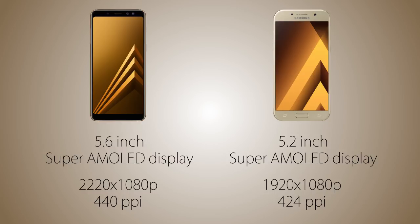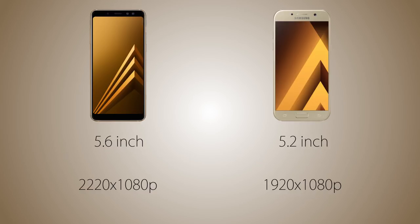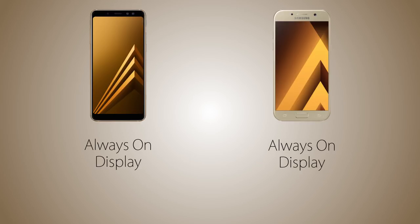Both handsets are coming with Super AMOLED screens. The resolution is going to be Full HD+ on the A8 2018 vs Full HD on the A5, so the pixel density is going to be 424 ppi on the A5 vs 441 ppi on the A8 — not a big difference. The always-on display is going to be there on both handsets.